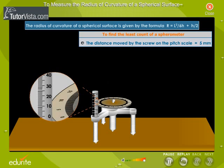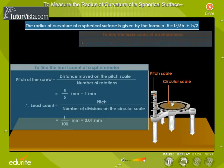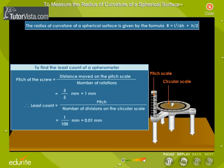Note the distance moved by the screw on the pitch scale. Pitch of the screw is equal to distance moved on the pitch scale by number of rotations. Therefore, least count is equal to pitch by number of divisions on the circular scale.